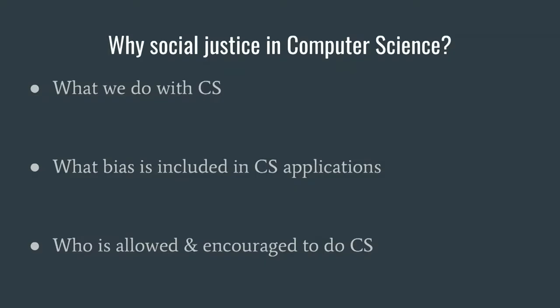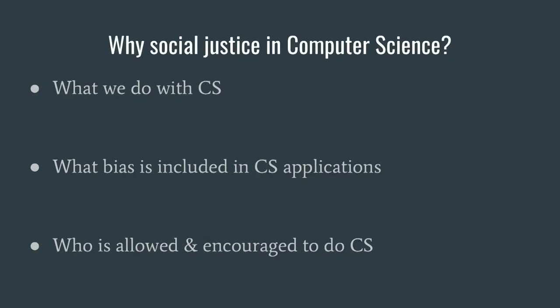That's one example of a computing system presented as a neutral tool — one that just takes data and feeds back information and helpful choices — that can actually be biased in ways that sound ludicrous on the surface. Of course a computer can't, on its own, be racist. I want to dig deeper into what kinds of things can cause computer science to be part of systems that oppress people or promote discrimination. I'll break the motivation for social justice in CS into three sub-categories: what we do with CS, what bias is included in CS applications, and who is allowed and encouraged to do computer science.